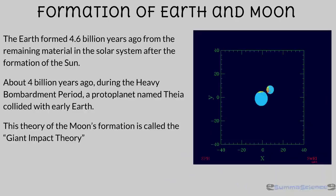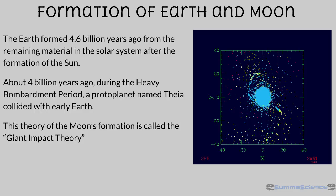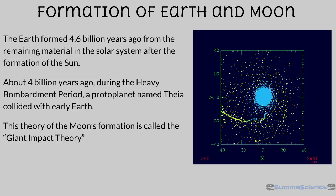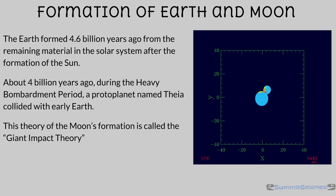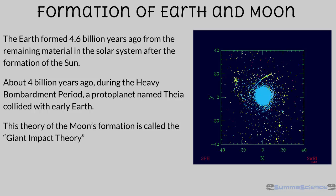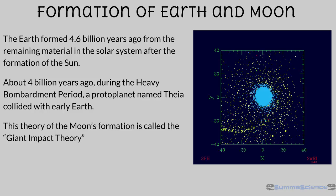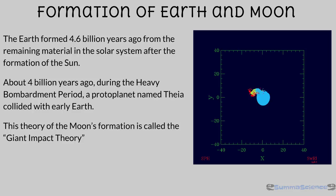The formation of the earth and moon. The earth formed about 4.6 billion years ago from the remaining material in the solar system after the formation of our sun. The early earth was not a pleasant place to be — it was very hot, molten rock for most of its early life. Then approximately 4 billion years ago, during the late heavy bombardment period, a proto-planet named Thea collided with early earth. This theory is called the giant impact theory.